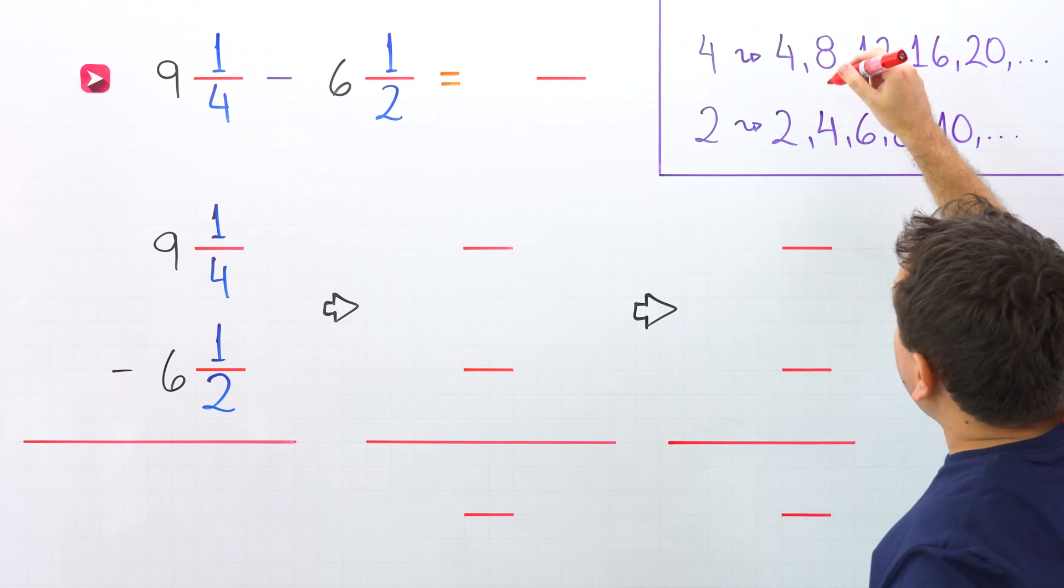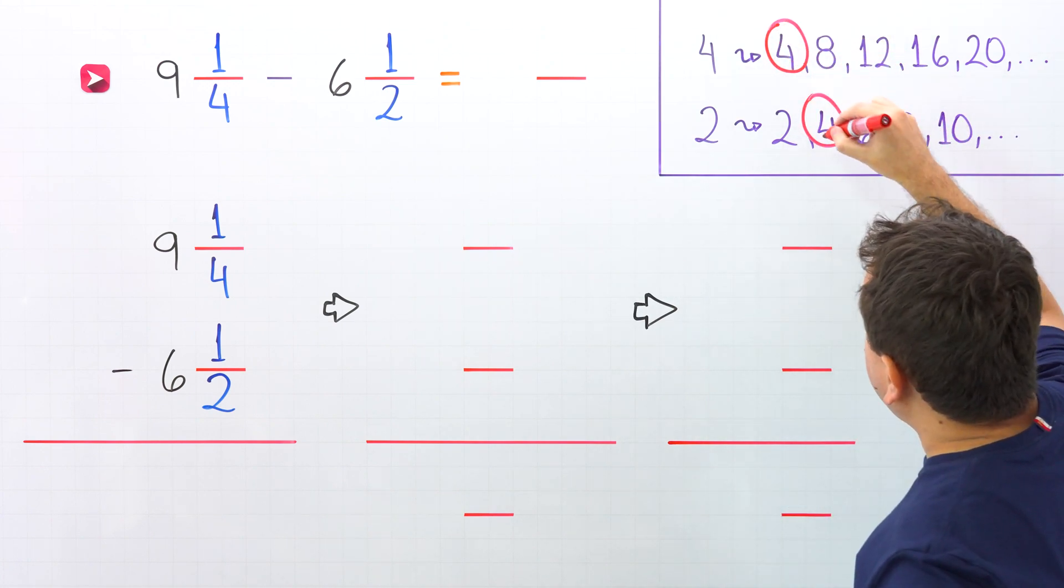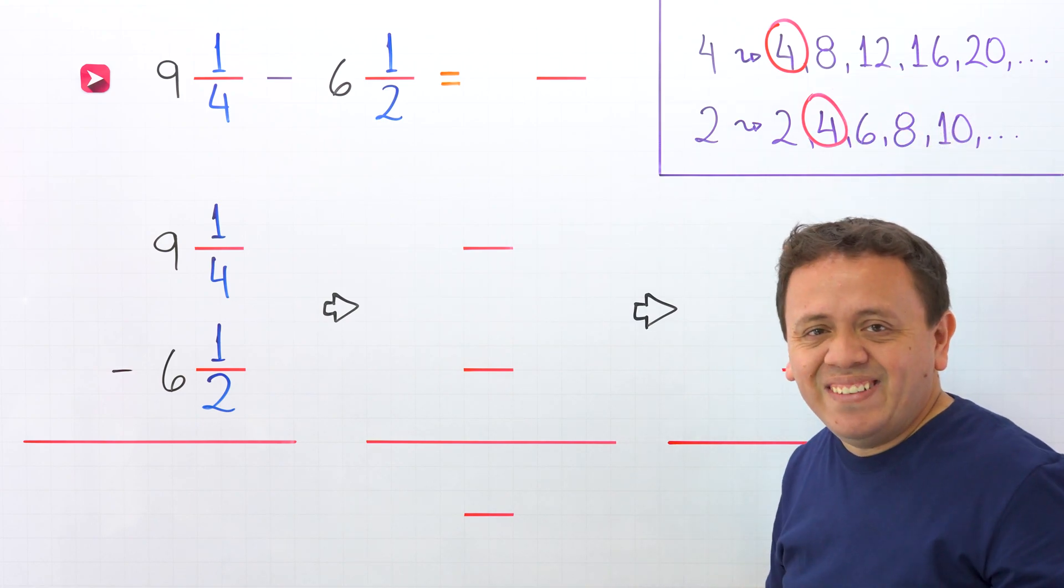The smallest number that we can find on both lists is 4. Then, 4 is the winner, 4 is the least common denominator.